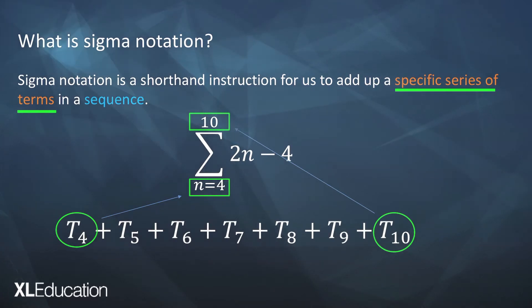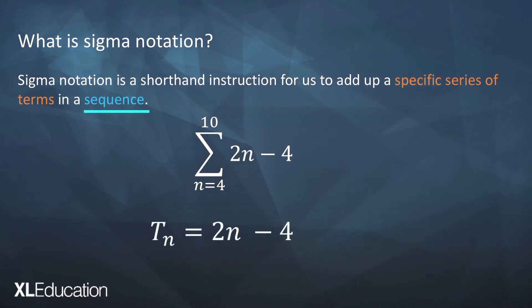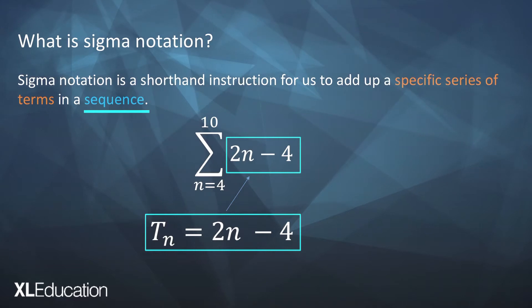How do we generate these terms? Well we've got the function 2n minus 4 and that function is the function that we use to get the terms of a specific sequence. So that function is the function that we're going to be substituting into.